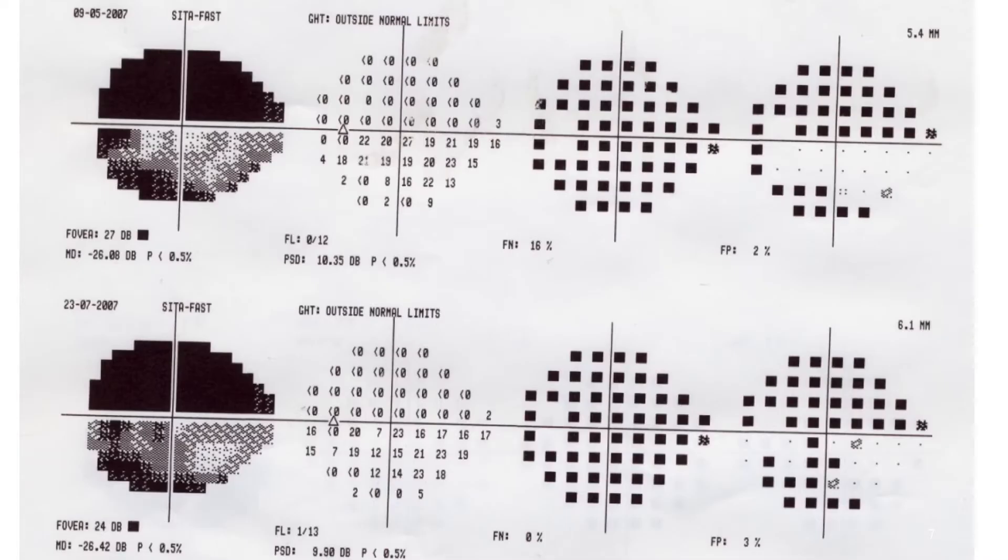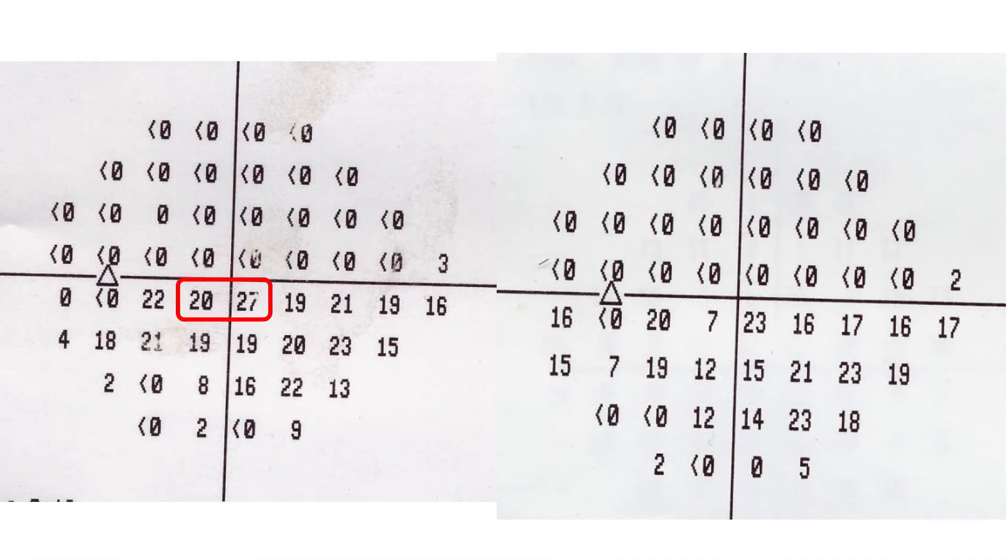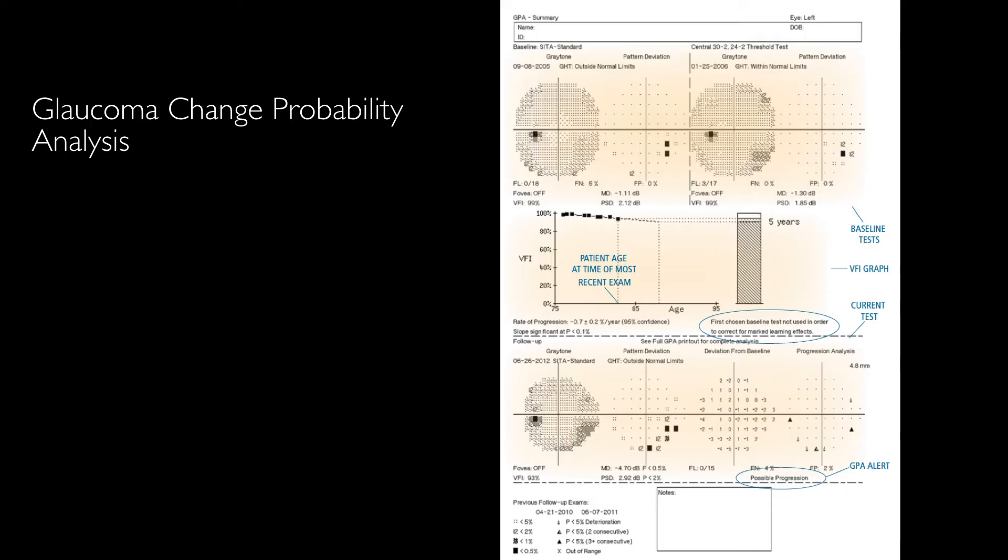One useful thing is checking the numeric map and the dB values over time. This is an example of an overview printout. As you can see here in the numeric map, there have been significant changes in the follow-up in the two central points.